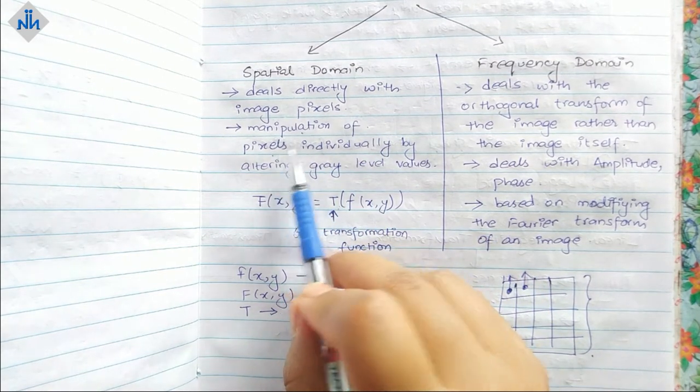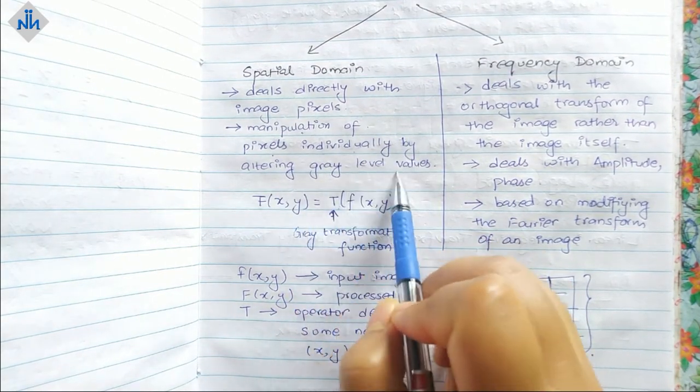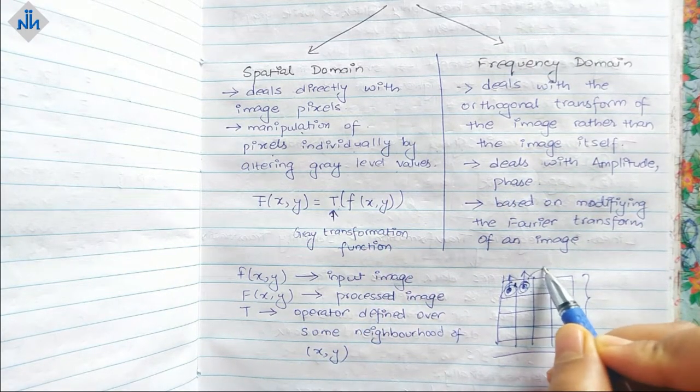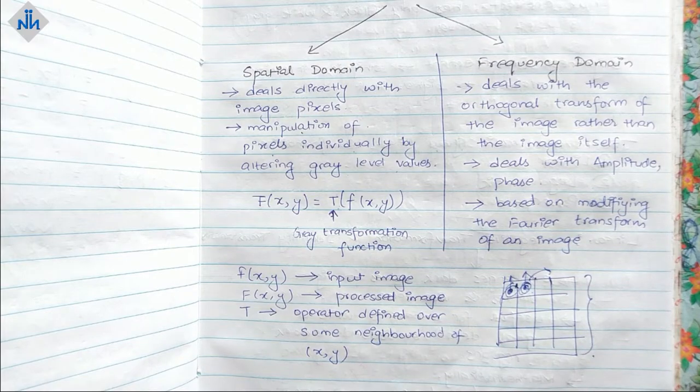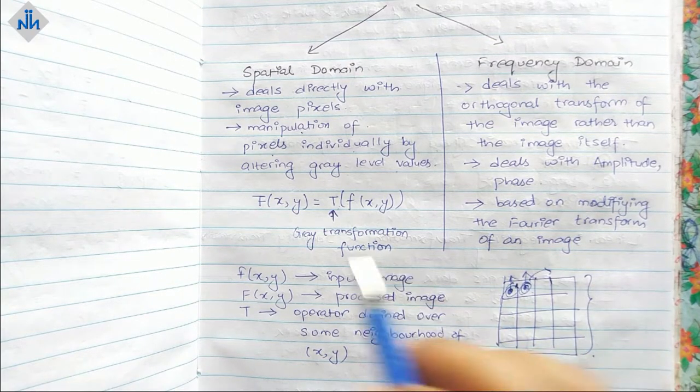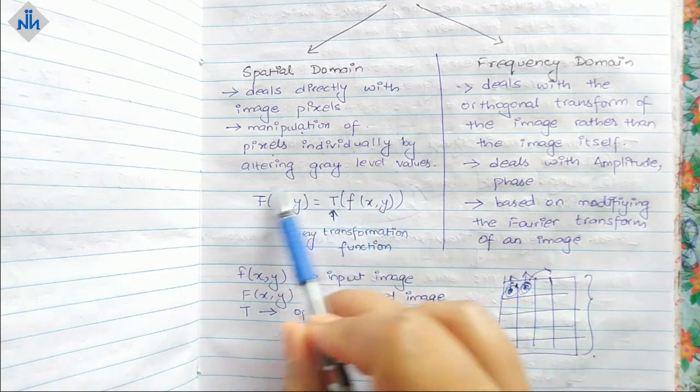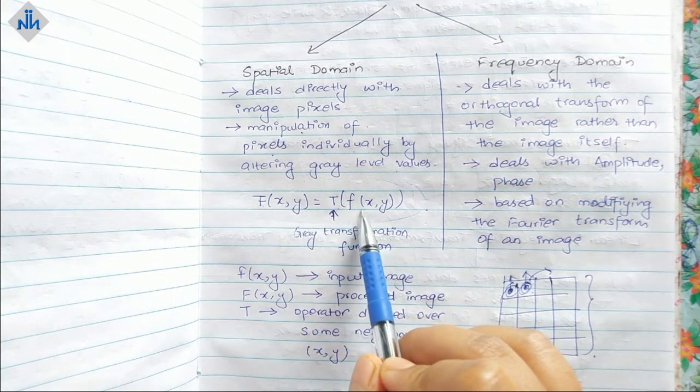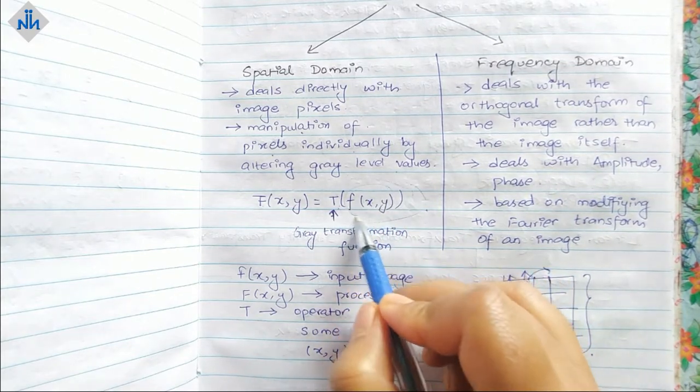Manipulation of pixels individually by altering gray level values. We can alter the gray level values to make it better or whatever we need as suitable per our needs. It can be mathematically represented by capital F of (x,y) is equal to T of f(x,y).